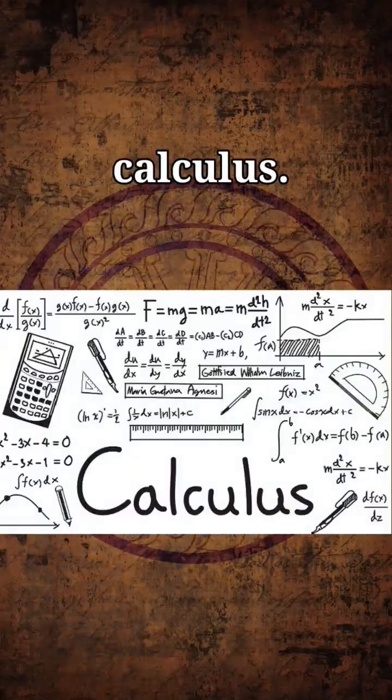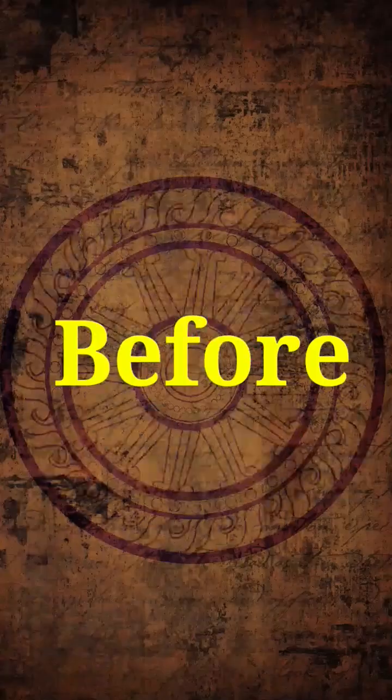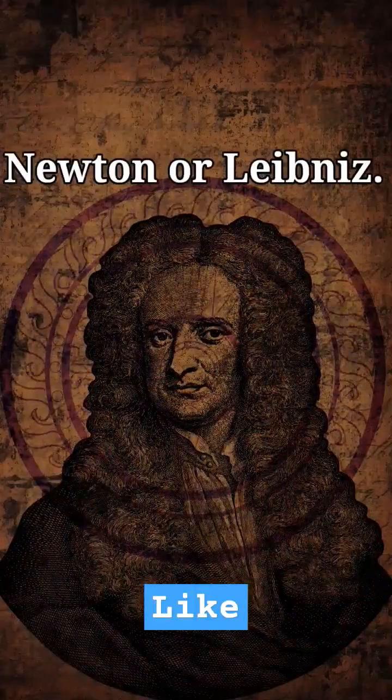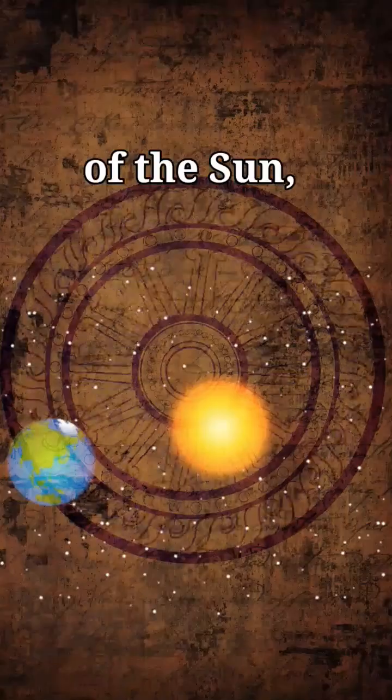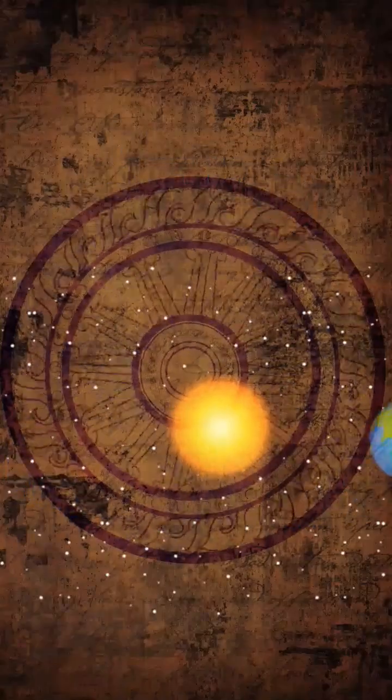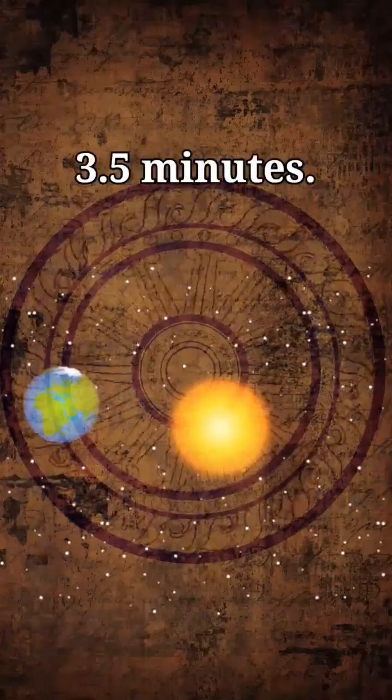Paskara was thinking about calculus 500 years before Newton or Leibniz. He even calculated how long Earth takes to orbit the Sun—almost exactly right, missing by just 3.5 minutes.